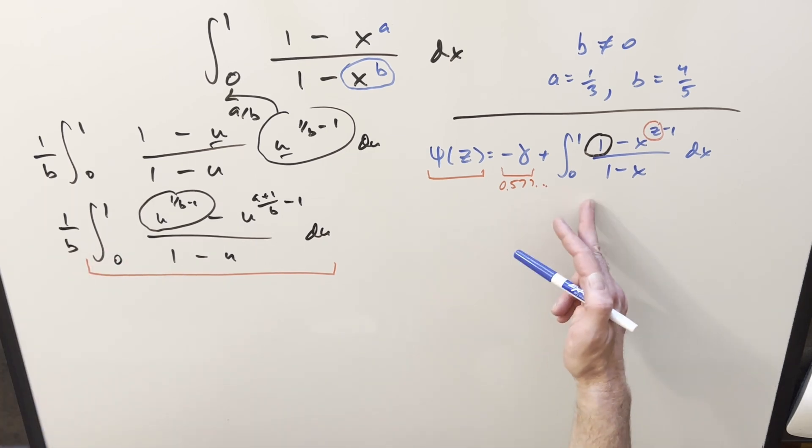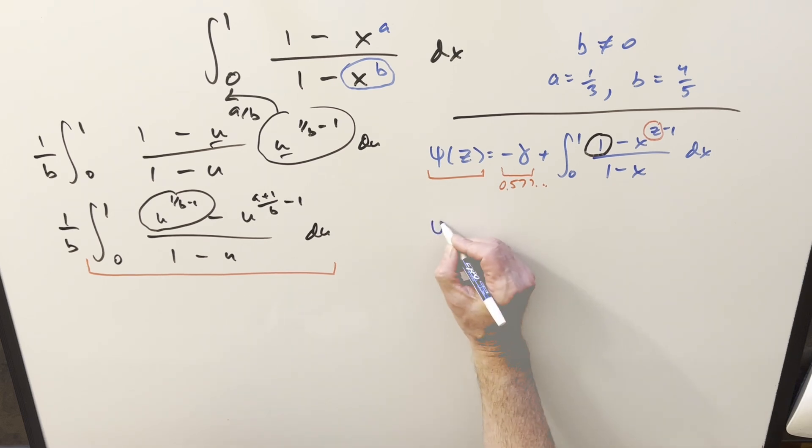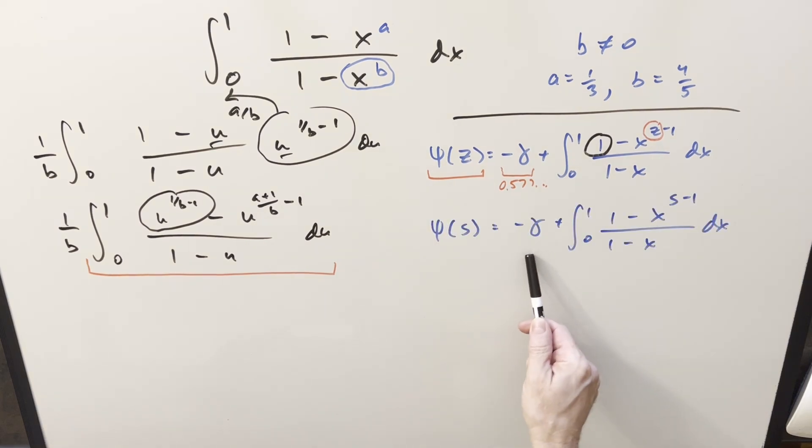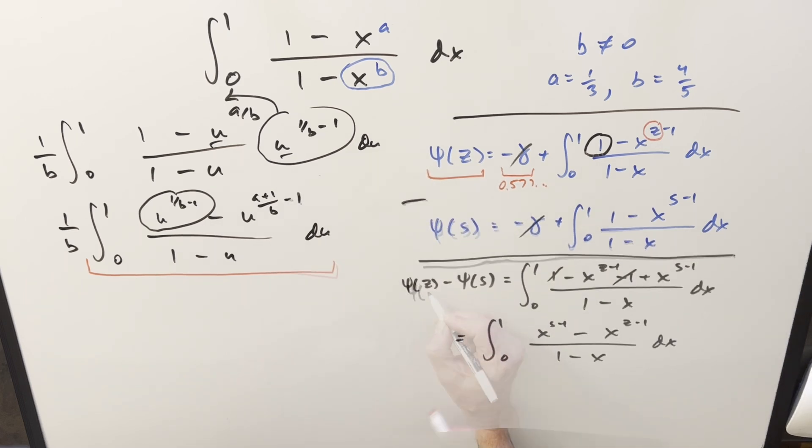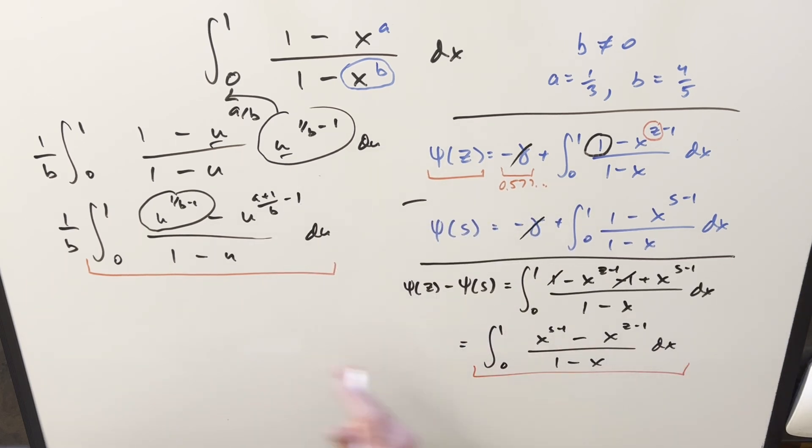All I need to do is create a second copy of this digamma function formula. Now what we have here is the exact same formula we have here. The only difference is the variable. So our input into this here is s, where here it was z. And then all I want to do is take these two formulas and just subtract them and see what we have. But now this formula right here, this is in exactly the same form as our integral right here. The inputs on this is just going to be right here, the s value and the z value. So what we can do is, if we have the integral in this form, we can express it as the difference of two digamma functions.